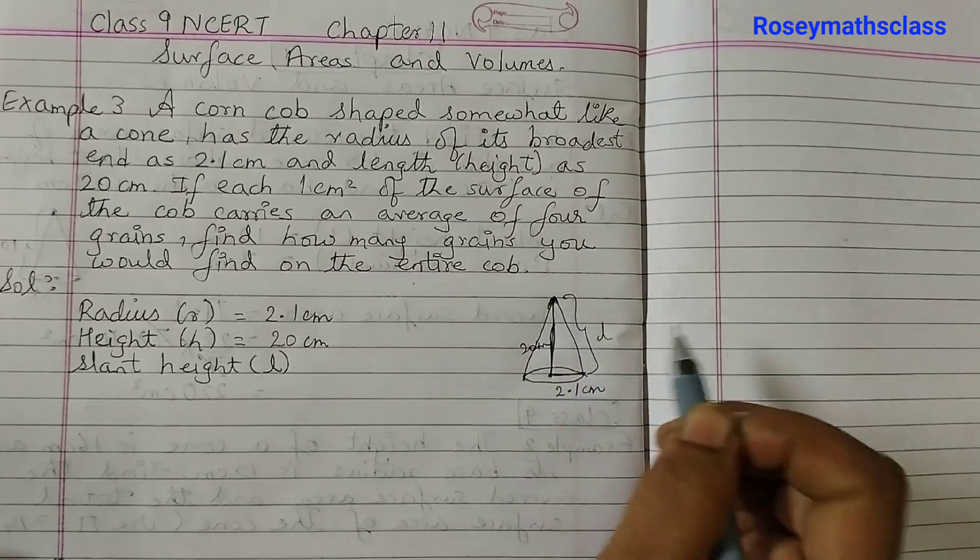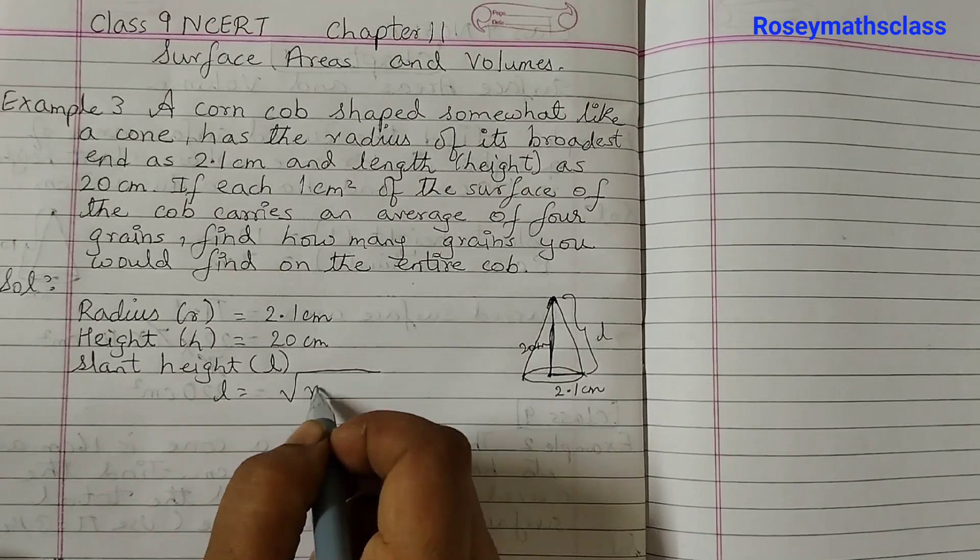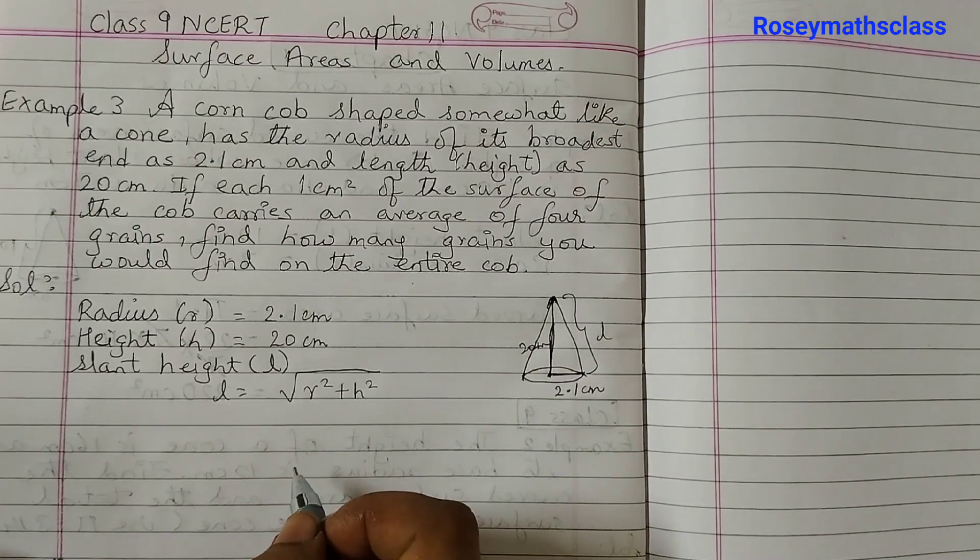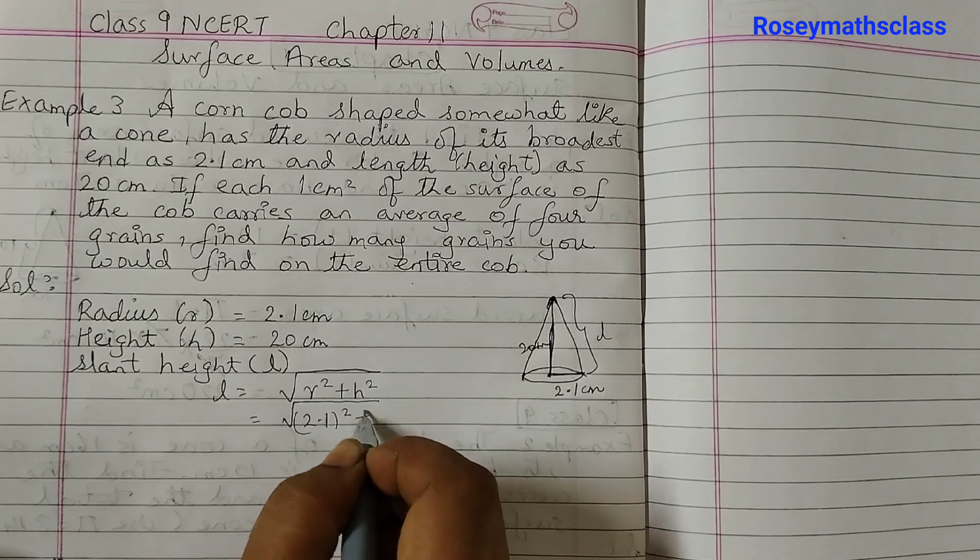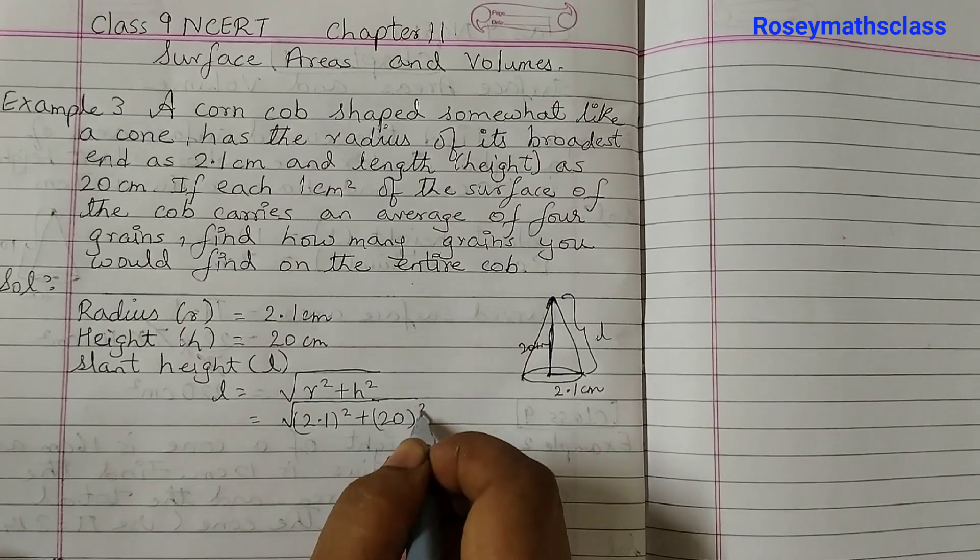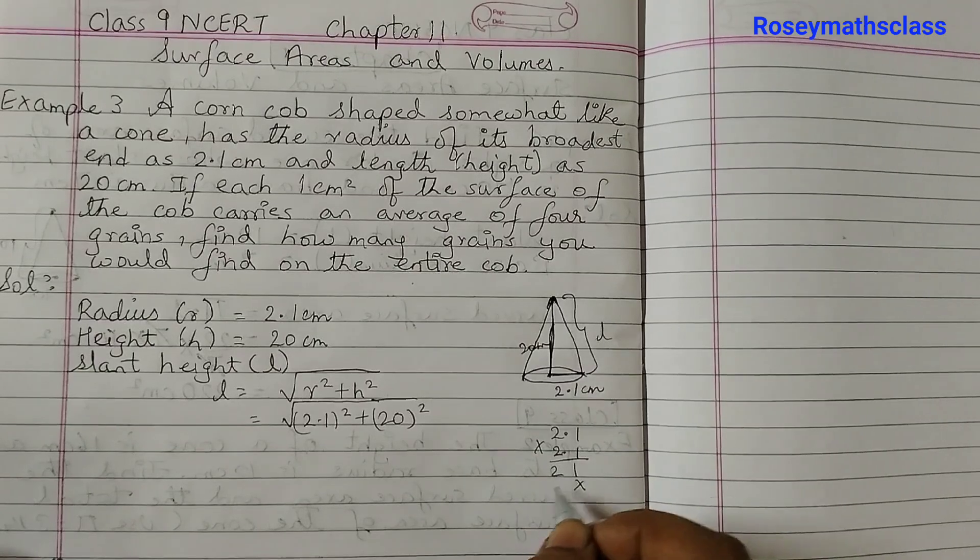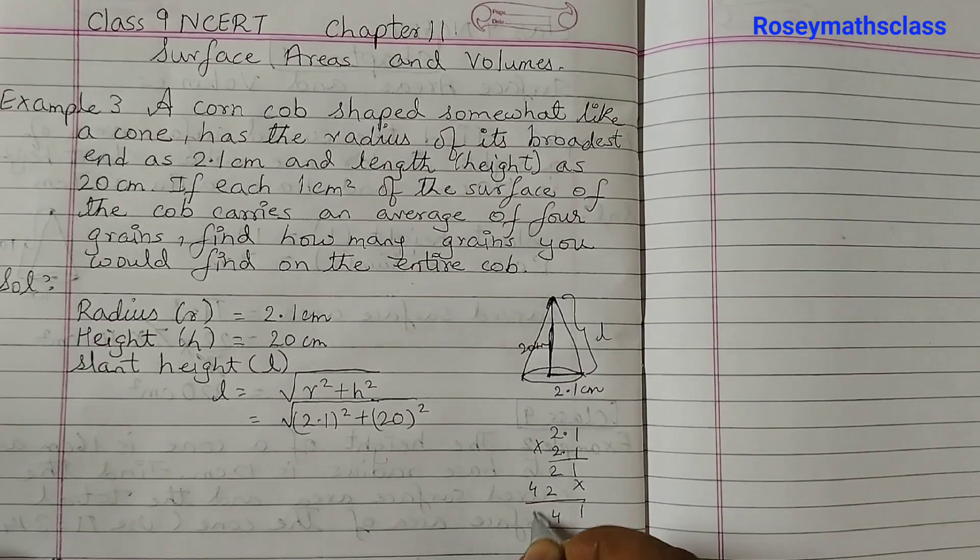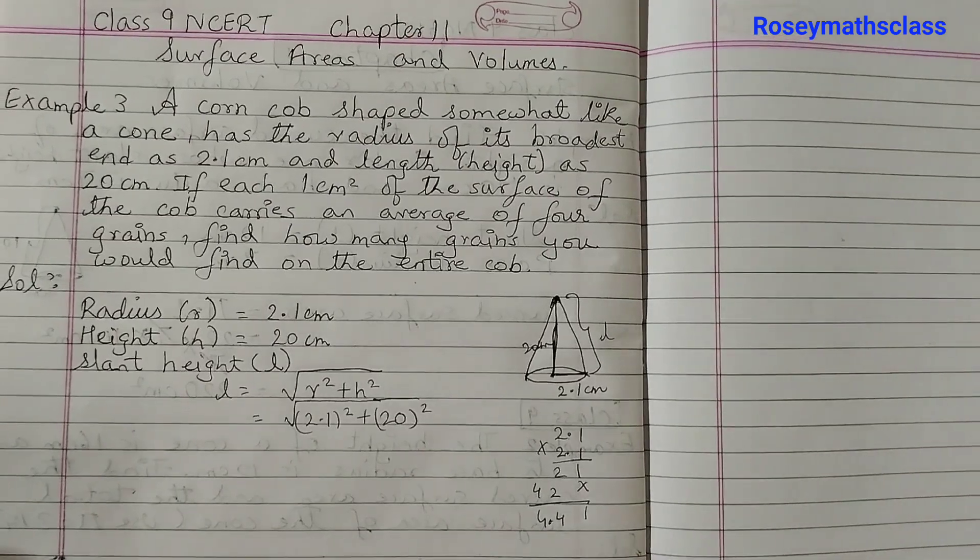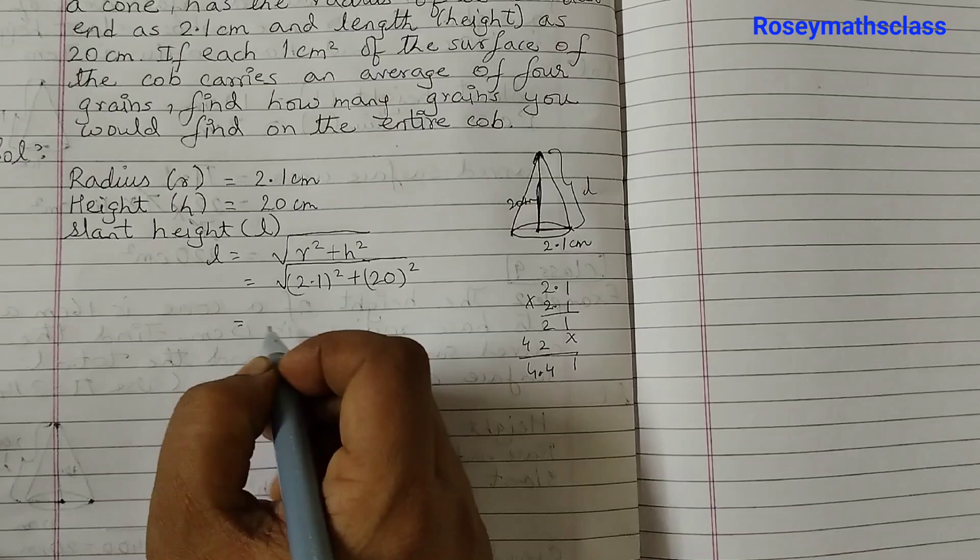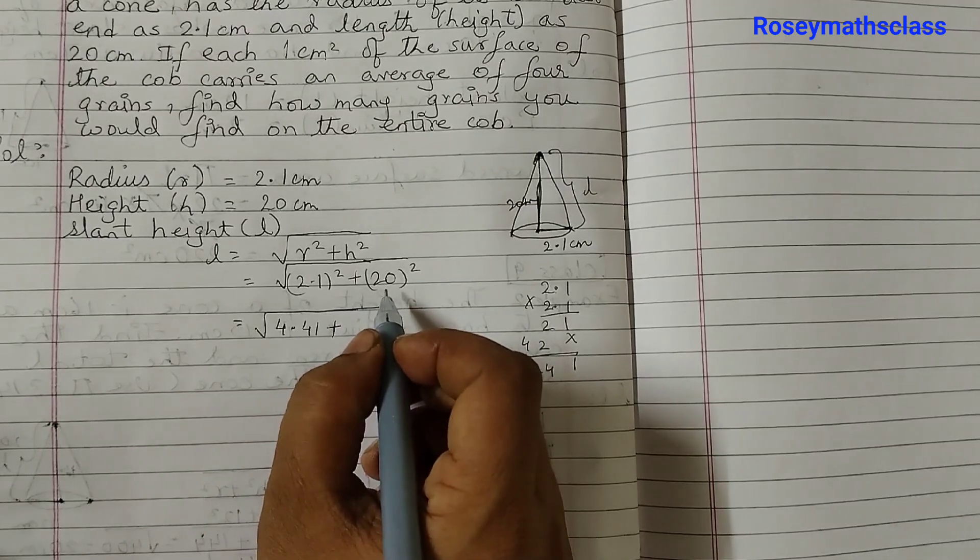Slant height is this height which is L. The formula for slant height is L equals to square root of R² plus H². That is the Pythagoras theorem. So here R is 2.1² and H is 20². So rough work: 2.1 times 2.1. This is 21 and this is 42. So 4.41.